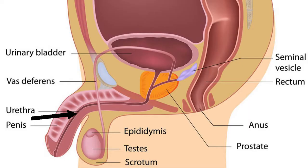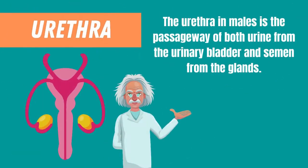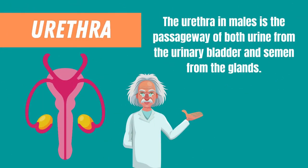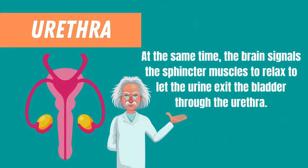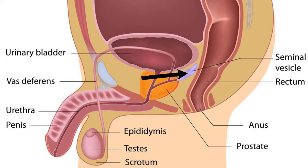Now let's talk about the urethra. This tube allows urine to pass outside the body. The brain signals the bladder muscles to tighten, which squeezes urine out of the bladder. At the same time, the brain signals the sphincter muscles to relax to let urine exit the bladder through the urethra.